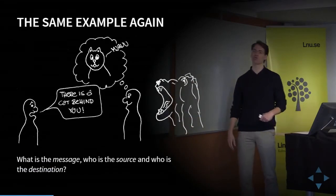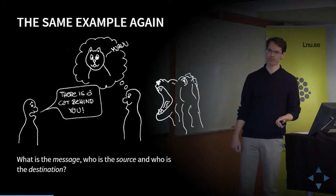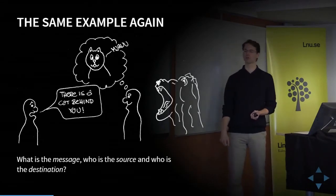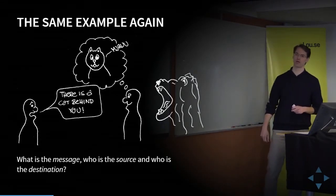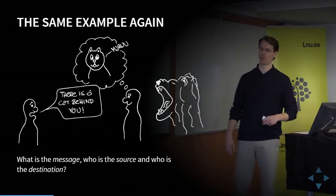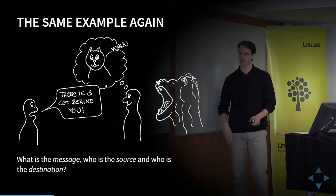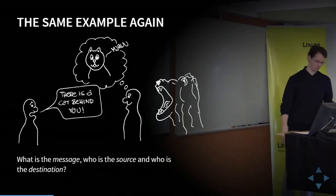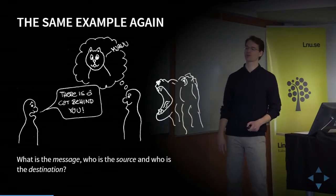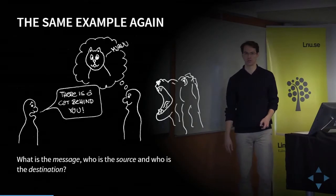Looking at the picture again — the message is the idea that there is a lion behind the right person; 'There is a cat behind you' is the specific message. The source is the person who says this, and the destination is the person about to be eaten. These words — source, destination, and message — are important in computer networks and will come again and again.